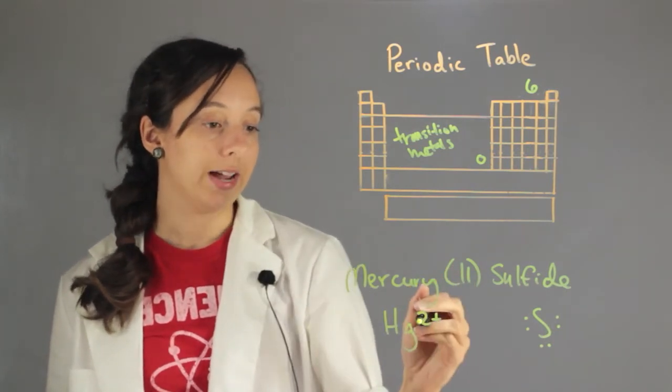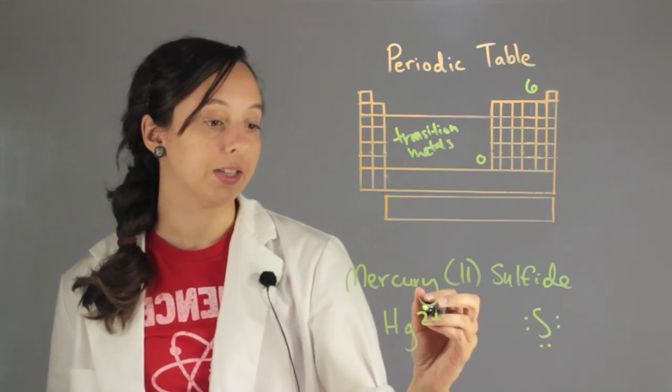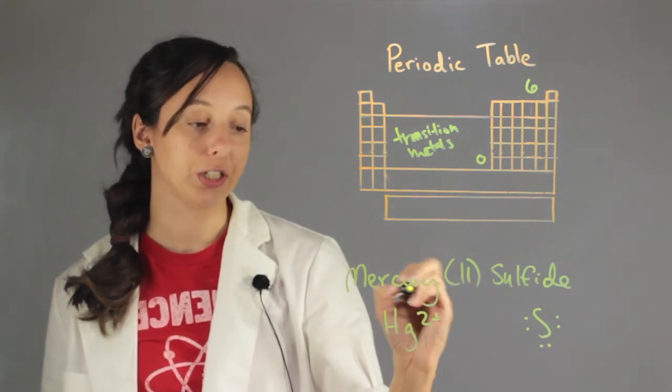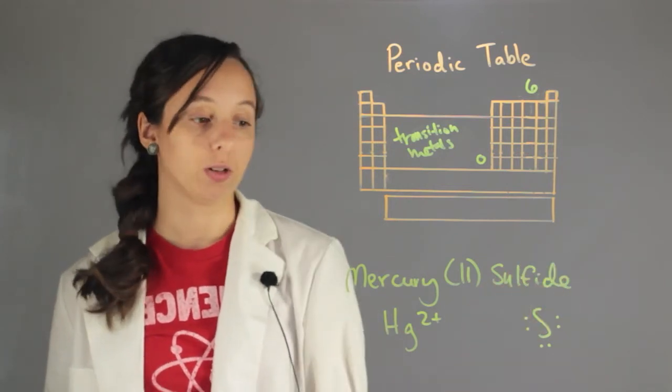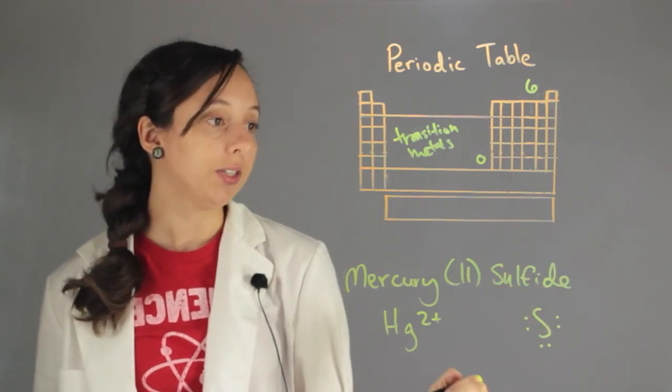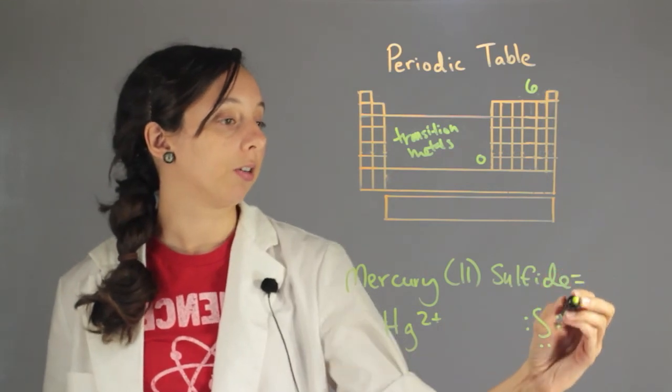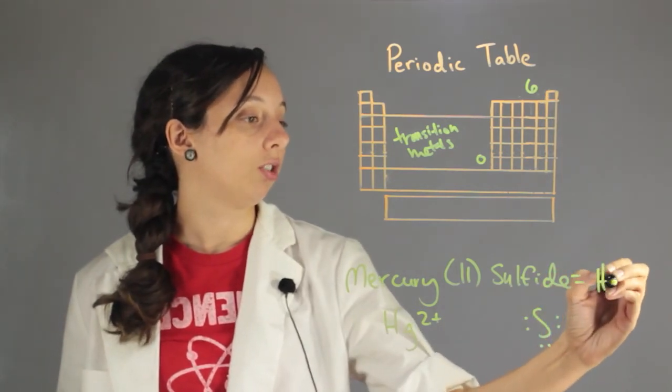Now, this works out nicely because it means that it wants to match with something. It wants to give away two electrons. And this sulfur happens to be looking for two electrons. So in this case, we can just write the chemical formula for mercury sulfide as HgS.